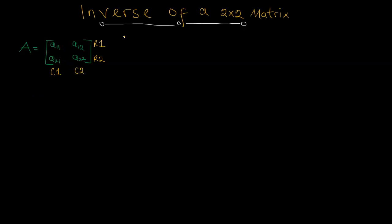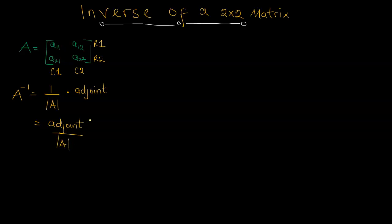Now, we can obtain the inverse of this matrix using this formula. A inverse — written as A to the power of negative 1 — is equal to the adjoint of A over the determinant of A. A sandwiched between two bars is the determinant of A.